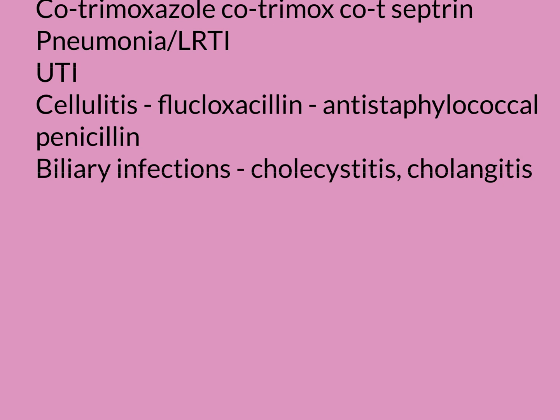You can get infections in these systems — in the gallbladder and in the bile duct. Cholecystitis is when you've got an infection primarily in the gallbladder, and cholangitis is when you've got an infection in the bile duct. These infections nearly always arise because people have gallstones — bile can solidify over years and form stones inside the gallbladder.